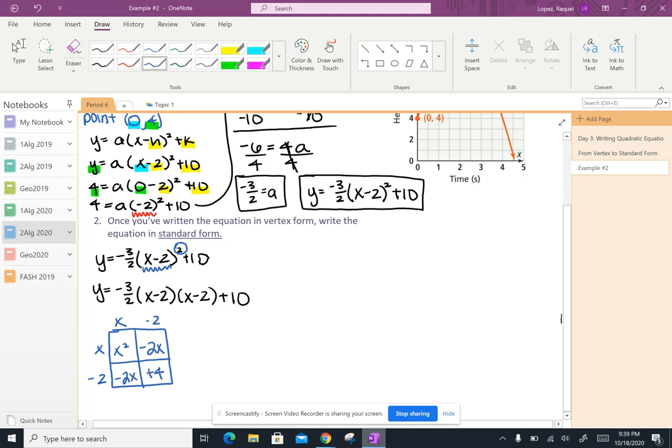So once I've multiplied everything, I can go ahead and add any like terms. And so when I add all of those things, I get x squared negative 2 plus negative 2 is negative 4. So I have negative 4x plus 4.